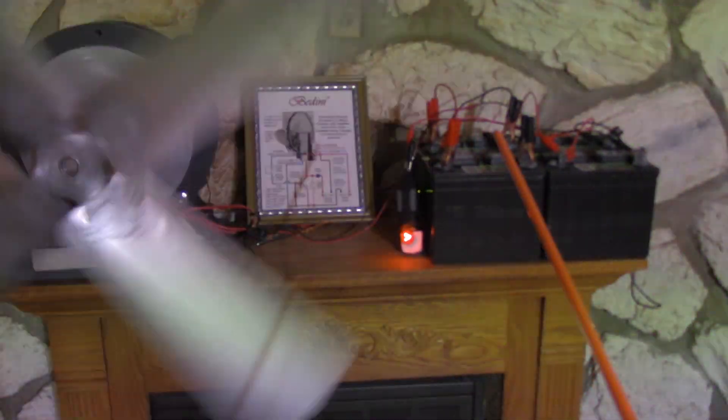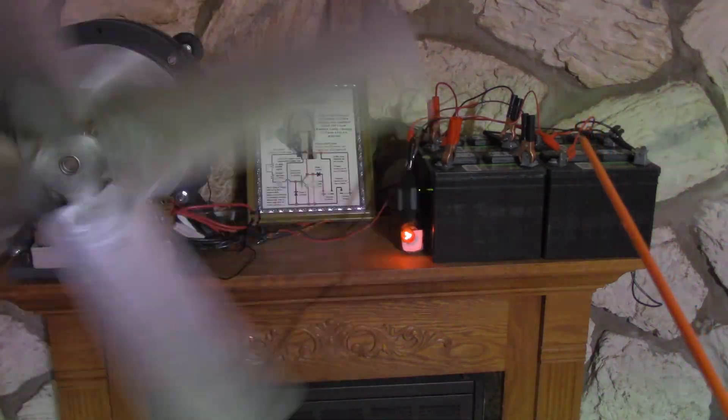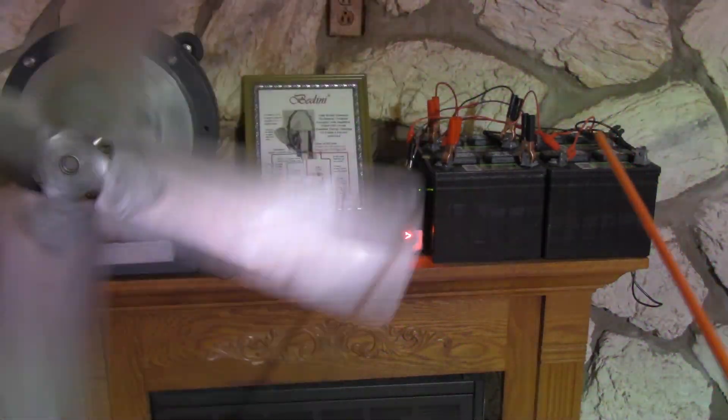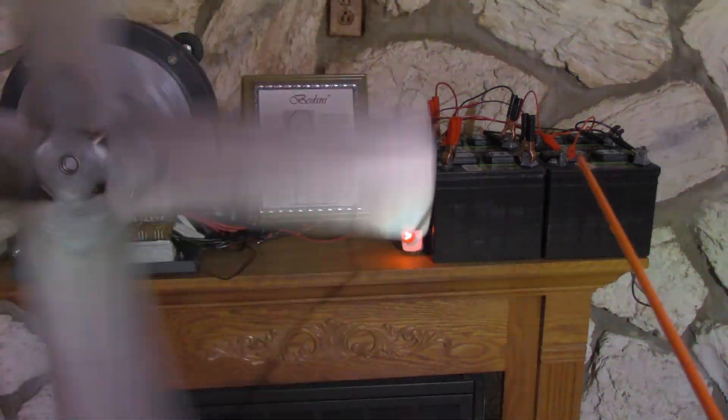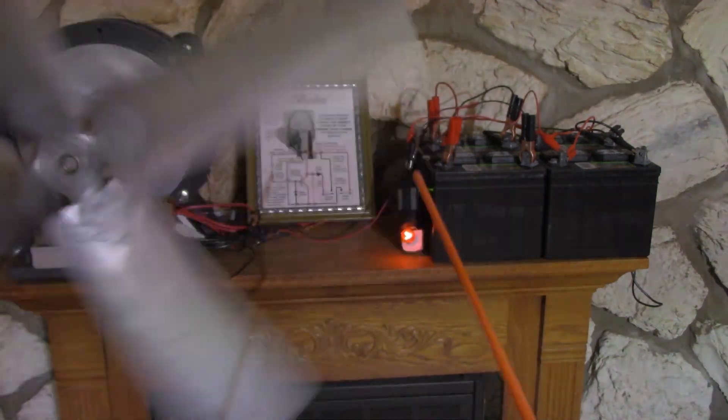This back battery is receiving the negative energy charging, or however you want to call that kind of charging. This back battery that's receiving the charging is connected up to this battery over here, the back one. That battery is connected up to this front one. Now we have the load across this output, which is going to this inverter.